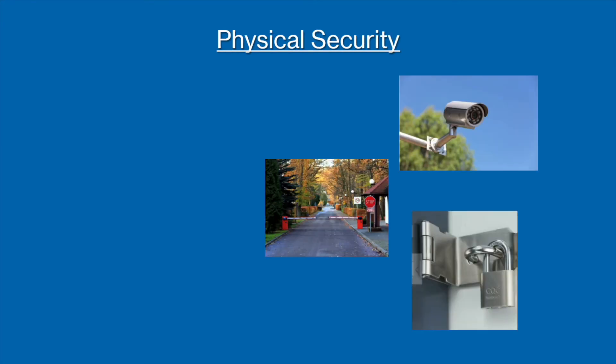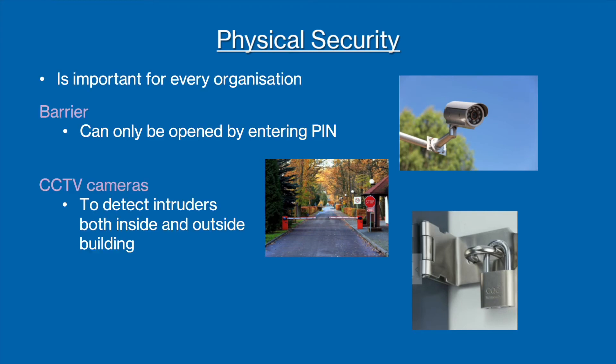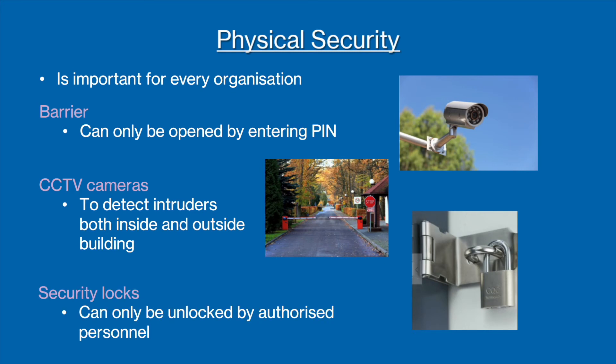All the methods of security mentioned so far have been digital security methods used to identify or prevent network attacks. However, the last method of security is physical security. This includes barriers, CCTV cameras and security locks, which stop attackers from entering a building and attempting to gain access to a system.